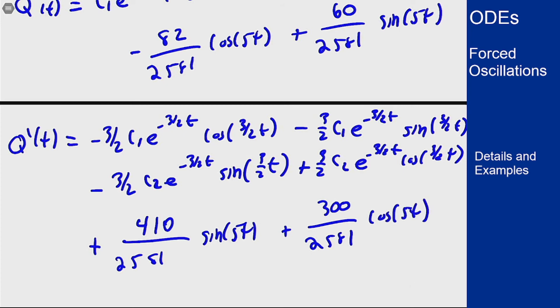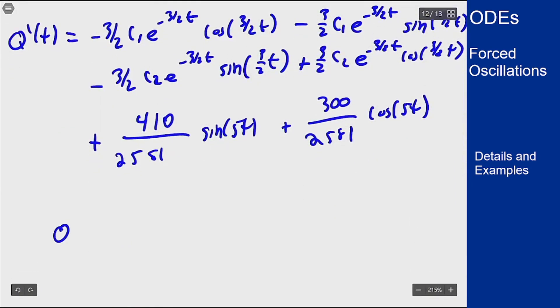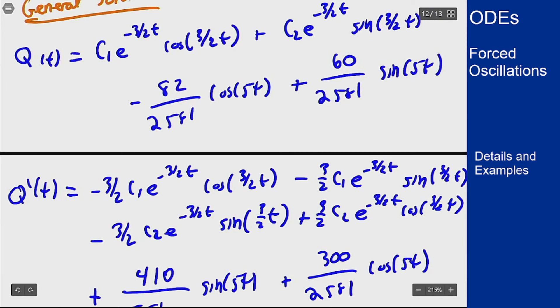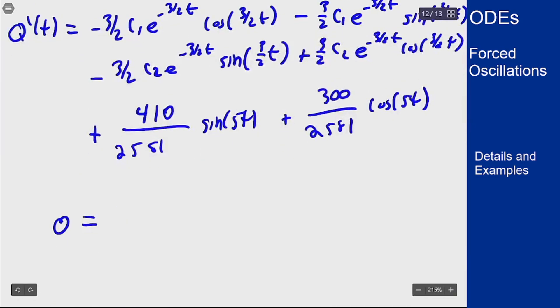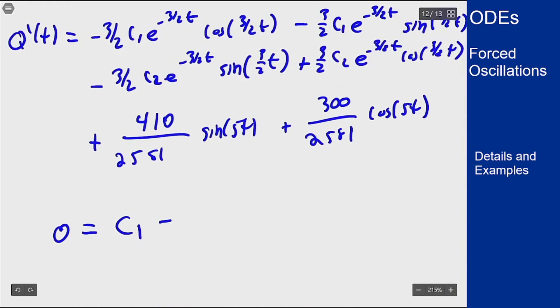Now we can plug in 0 and see what we get. For q(t) with t being 0, I get that 0 should equal, the cosine term sticks around so I get c1, the sine term goes away, the cosine sticks around minus 82 over 2581, and the other sine term goes away. This tells me that c1 must be 82 over 2581.